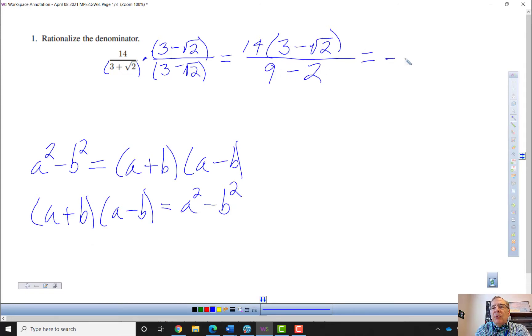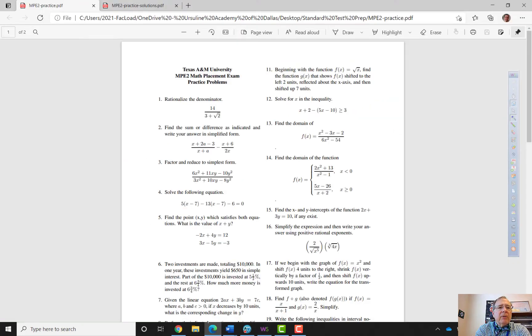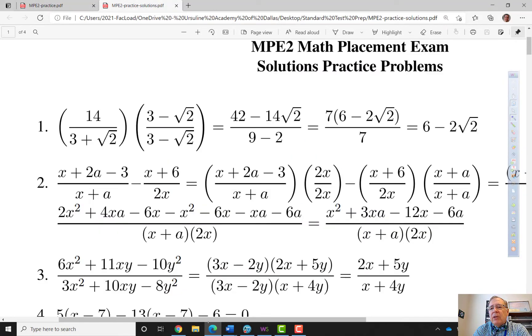So nine minus two is seven. So now you can see the wisdom of not distributing the 14 yet. So I can cancel that to just a two, and then distributing the two inside, I get six minus two square roots of two. And if we go check the answer, six minus two square roots of two.